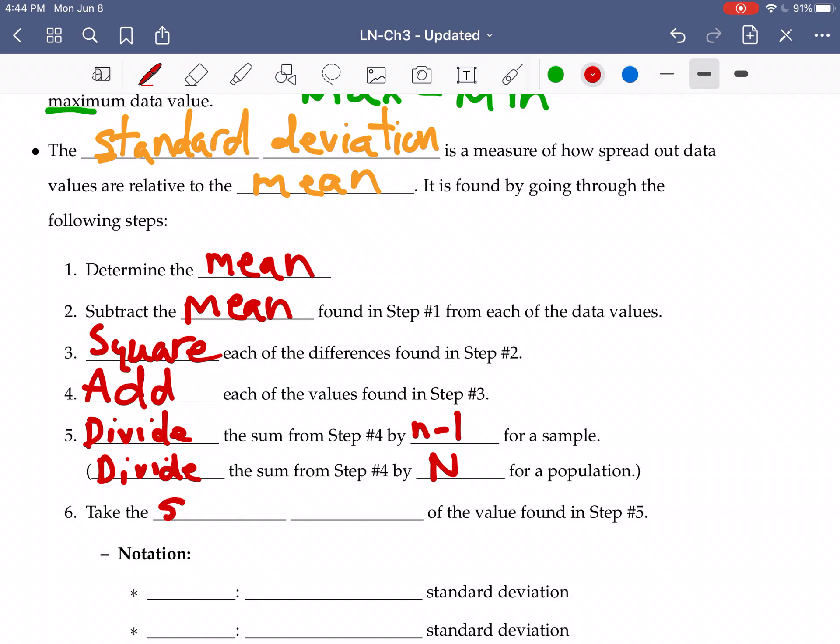And then the final thing we're going to do is we take the square root. So that quotient that we found in step five, we're going to take the square root of that value. As far as a formula goes, the formula looks like this. We use sigma for sum. We're taking each of the data values and we are subtracting the mean and squaring that. We're dividing this by n minus one. So I'll write this formula for a sample and we take the square root. So that is our formula for a sample standard deviation.